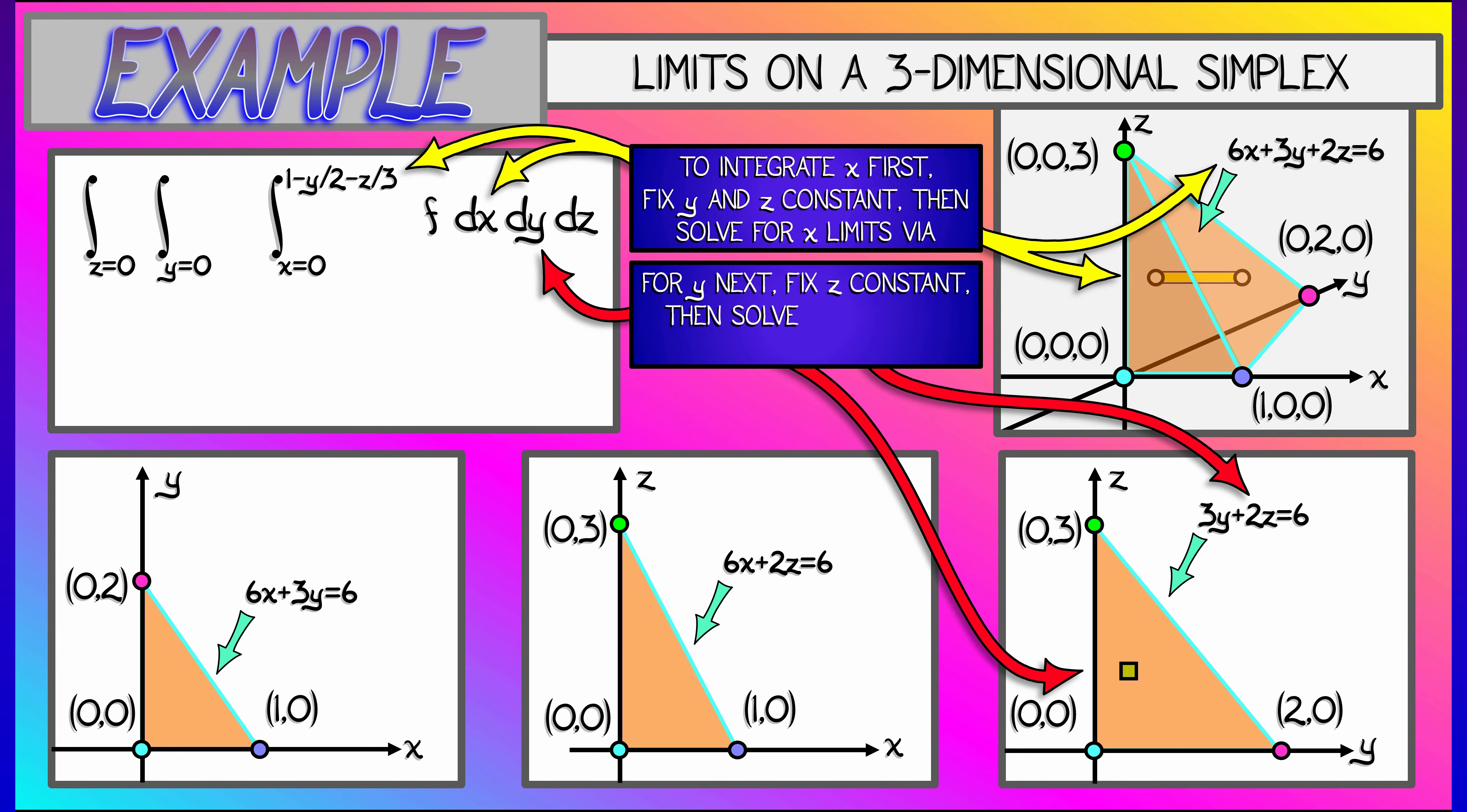Now, next we have to integrate out in y. So what we do is we look at the projection to the y-z plane. This is now just like with a double integral. We assume z to be a constant, and then we get the limits on y. The lower limit being clearly zero, the upper limit being 2 minus two-thirds z, using the equation for that line in the plane.